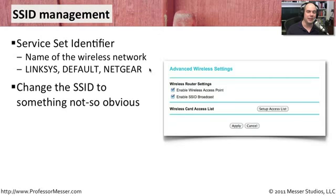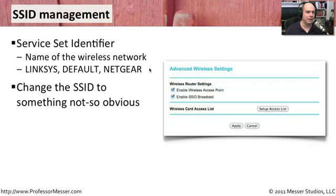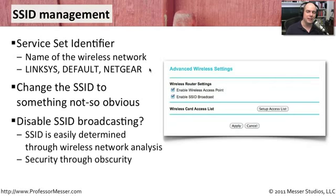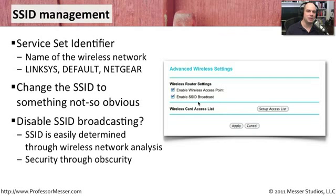Make sure it doesn't use a default name like Linksys, and maybe don't even give it a name that refers back to your organization — give it something very generic. You can also disable the broadcasting completely. This is a configuration setting from my access point — here's a checkbox: enable SSID broadcast or not. I can turn it on or off. But yet again, it's very easy with protocol analyzers to be able to sniff the air and see what access points are out there. As soon as somebody connects, you're going to see the SSID.